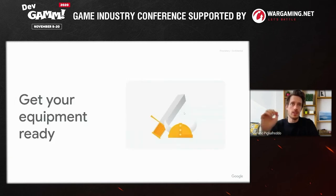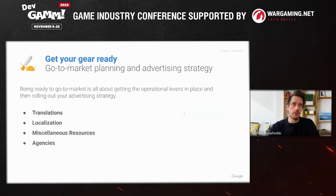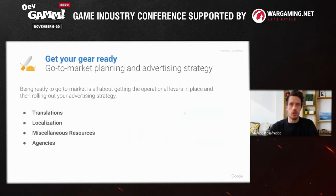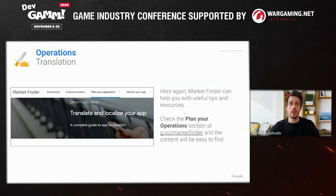So we've picked our quest and we know where we want to go. Now we need to get the equipment ready to play. This means being ready for the go-to-market strategy — all the operational levers must be in place before you roll out advertising or launch in general. This covers translation, localization, and other resources that need to be pulled into place when launching a new market, as well as third parties. For translations, you can go to Market Finder and find very useful tips and resources under the 'Plan Your Operation' section in the navigation bar, once again at g.co/market-finder.